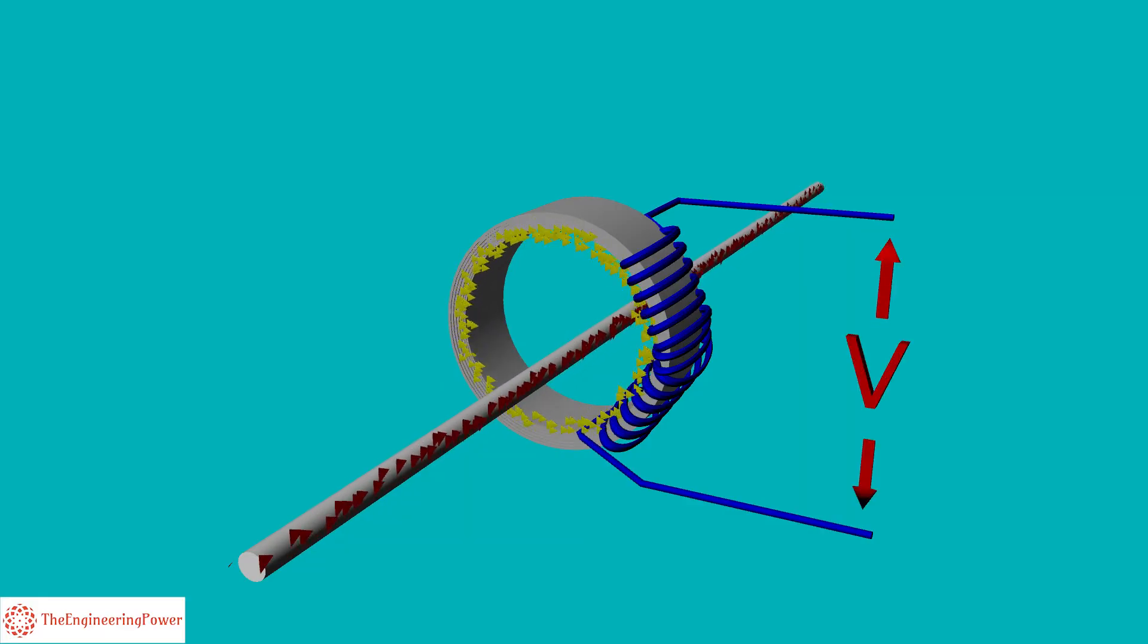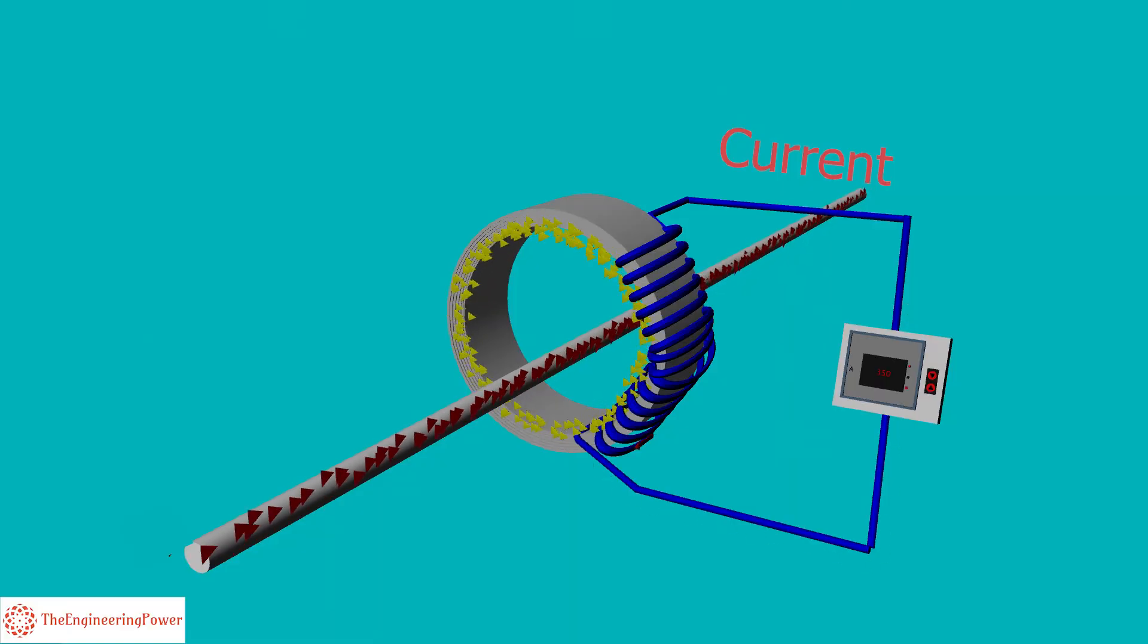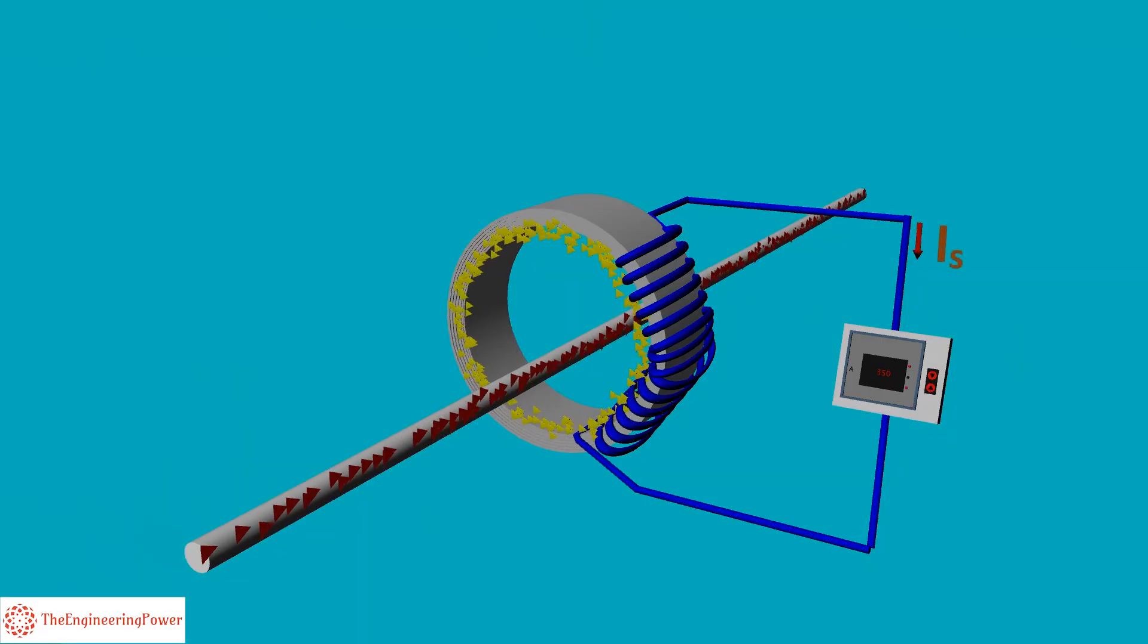As a result of induced voltage, current flows in the secondary winding because the secondary winding has a closed loop by either connecting with the ammeter or other instruments. The current in the secondary winding depends on the number of turns in primary and secondary windings.